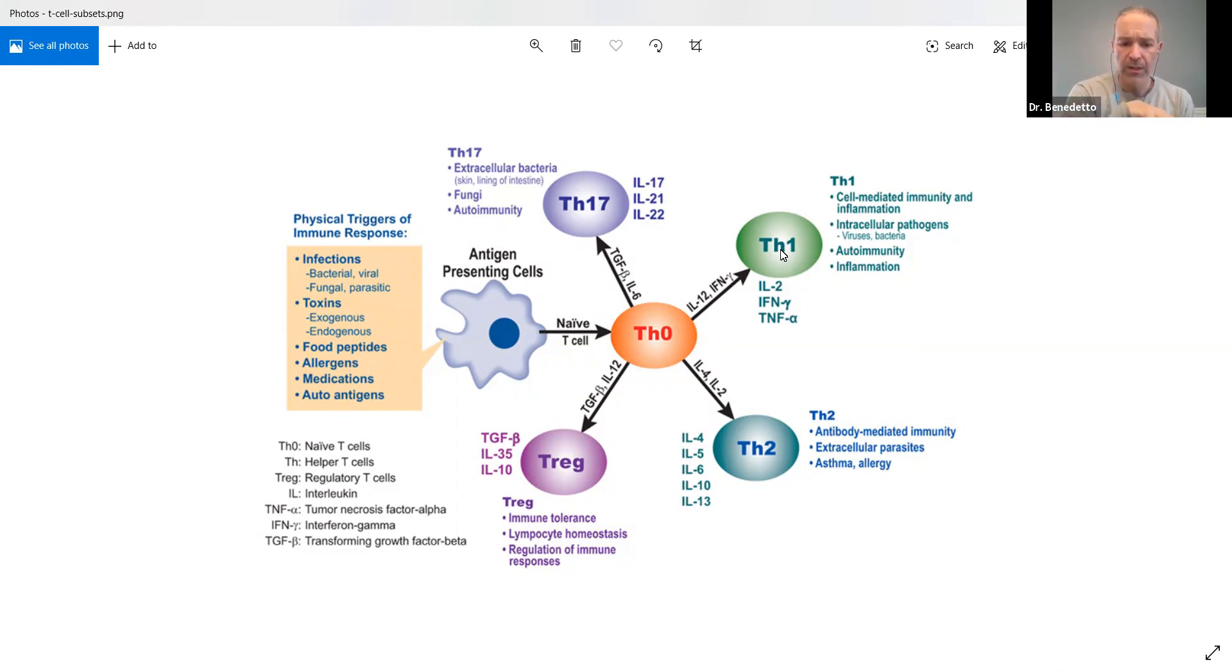Th2 is kind of longer-term immunity. So what you'll see is, I'm sorry, that's backwards. Th2 is short-term. Th1 is long-term. See, even I get confused sometimes with all this stuff. So yes, Th1 is long-term. Th2 is short-term. So think of Th2 like the first responders. Like something, you get a cut, you get an inflammatory response, you get an immune response, Th2.